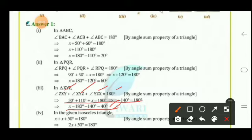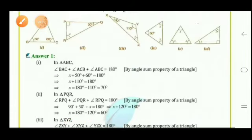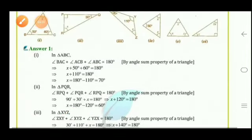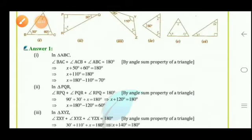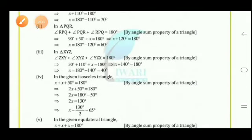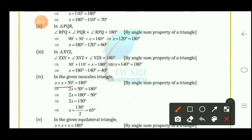Part 5 — it is an equilateral triangle, so all three angles are equal: x + x + x = 180°, giving 3x = 180, so x = 60°. Part 6 — angles are x°, 2x°, and 90°. Using angle sum property: x + 2x + 90 = 180, so 3x + 90 = 180, giving 3x = 90, therefore x = 30°.